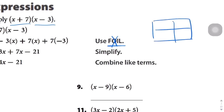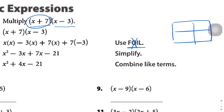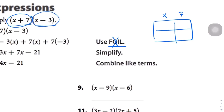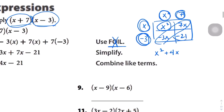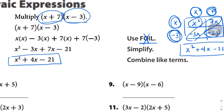The BOX method is called the BOX method because you literally draw a box. You take the two binomial terms — in this case x plus 7 on top, and x minus 3 on the side — and multiply out those terms. x times x gives us x squared, x times 7 gives us 7x, x times negative 3 gives us negative 3x, and negative 3 times 7 gives us negative 21. We write x squared first, then combine the like terms in the diagonal: 7x and negative 3x combine for positive 4x. So we get x squared plus 4x minus 21.